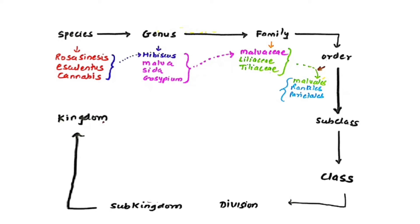Families like Malvaceae, Liliaceae, and Tiliaceae show similar characteristics and belong to the same order. Orders like Malvales and Parietales belong to the same subclass. The similarity among these three families is axial placentation — their ovary can be cut in transverse section into different parts from the same axis. These families are included in subclass Polypetalae, meaning free petals.